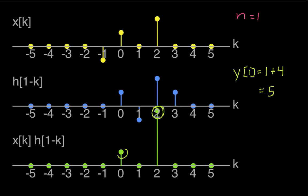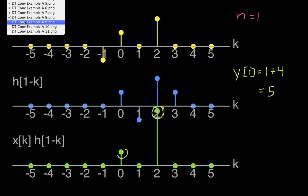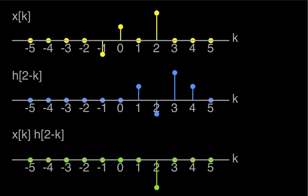Okay, so let's keep going. We now have the case where n is equal to two. I've taken h of minus k and shifted it two to the right. And the only place where I have things, I have a negative one times zero, a zero times one, a zero times one, a two times negative one. So I've got this negative two here, negative two.